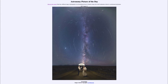Today's image is titled Perseid Rain. What we see here is not a single image but a number of images put together of the Perseid meteor shower from this past week, looking over the peak when we saw the most meteors. The way it is set up, it looks like all of the meteors are raining down onto the ground.